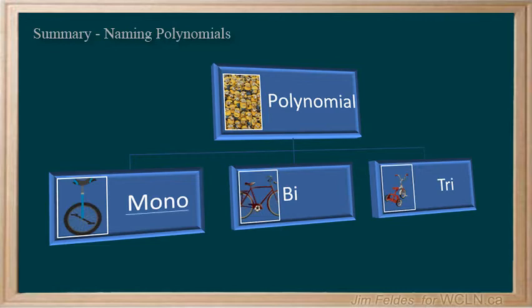Monomial tells you, without even seeing it, that there is one term. Binomial has two terms. A trinomial has three. And any more than that, we would certainly refer to them as polynomials.